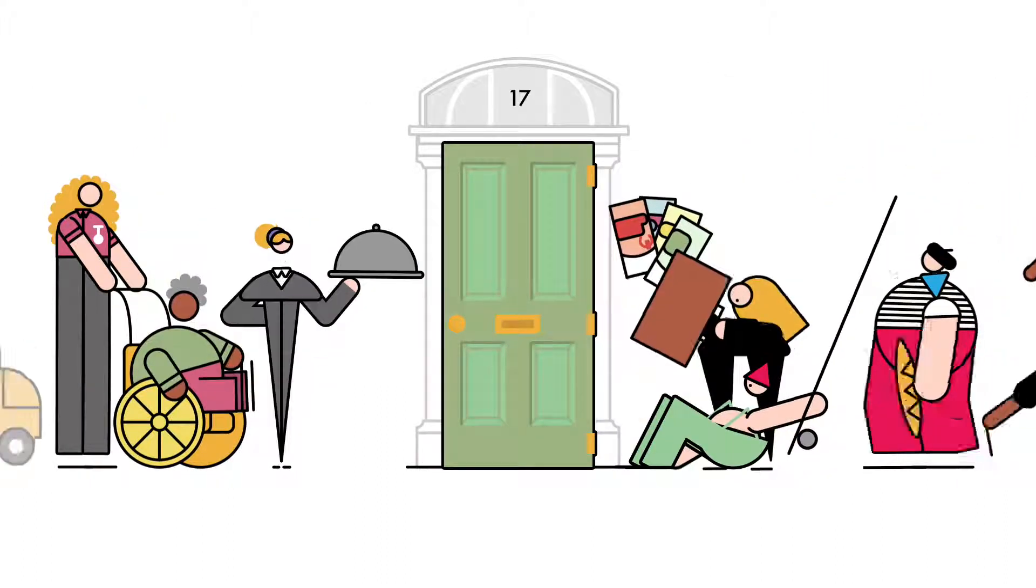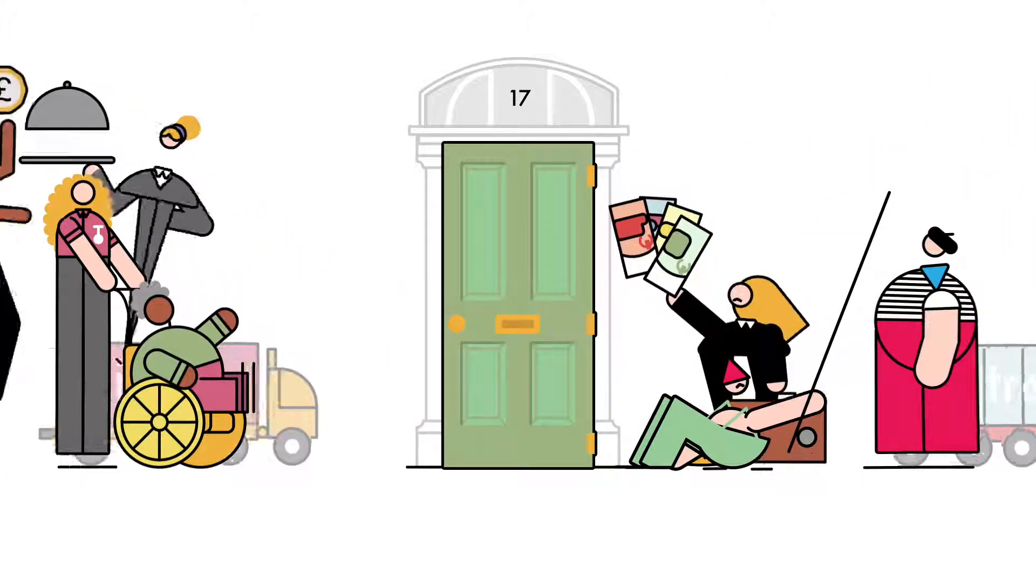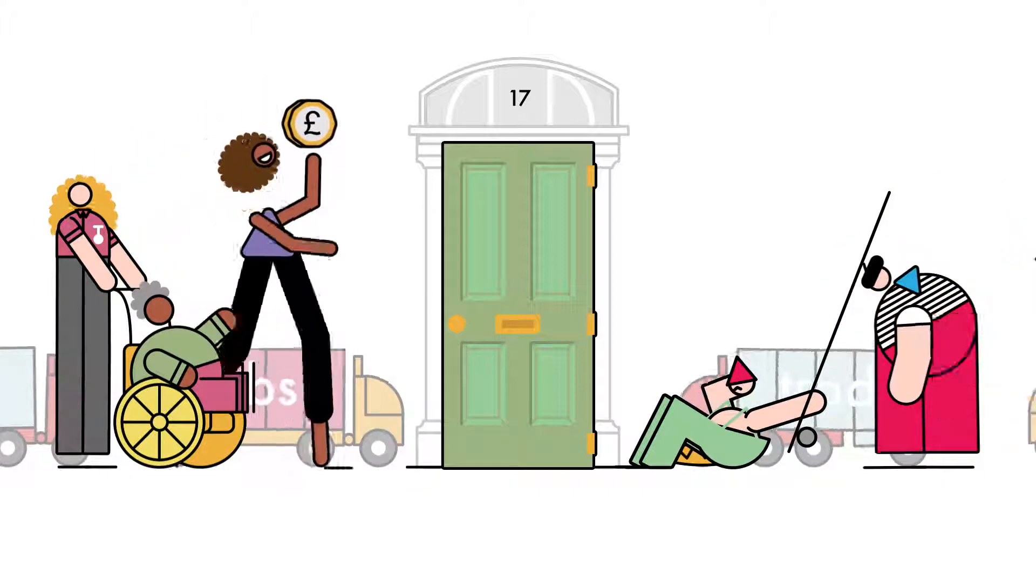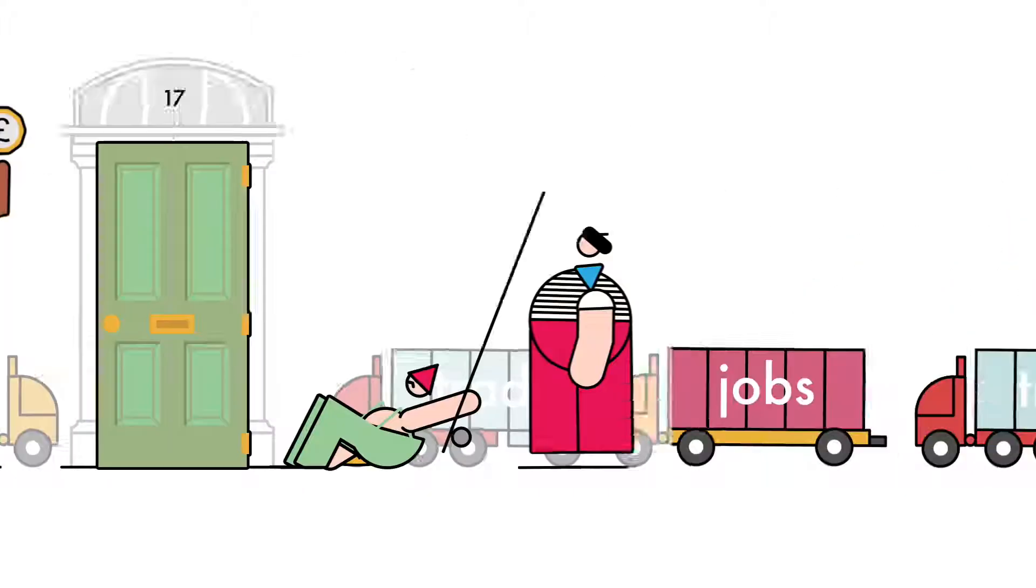The government is going to come up with a new immigration system. It will need to take account of the contributions migrants make as well as any public concerns.